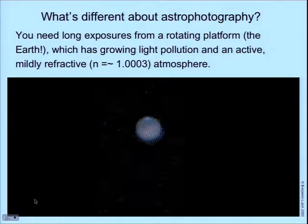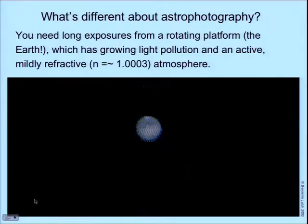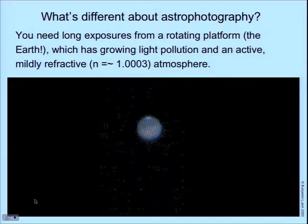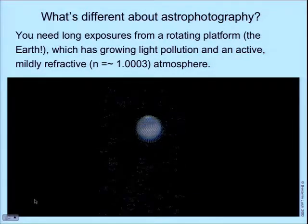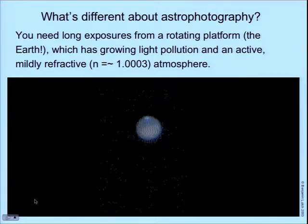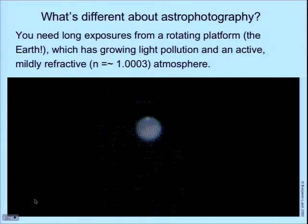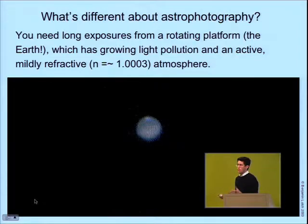The next thing you need to realize is that you're trying to image through the atmosphere, and the atmosphere is mildly refractive. This shows a picture of Mars through an eight-inch telescope. Mars is sort of dancing and jumping around, and bits of it are coming in and out of focus — not due to any problems with the mount or the telescope. This was captured with a webcam. It's all due to seeing. The atmosphere is a couple hundred thousand feet thick, mildly refractive, and moving around a lot — compressing and moving.